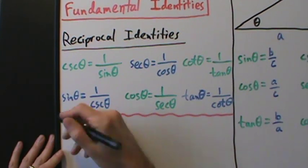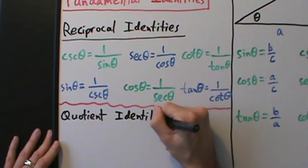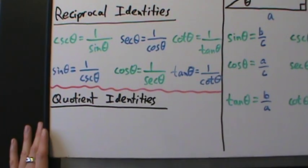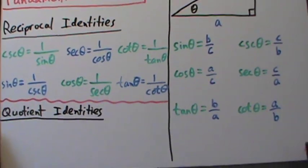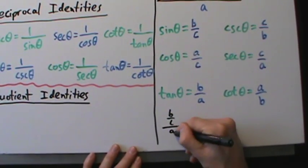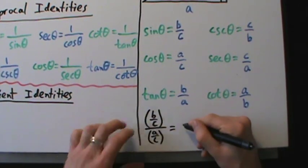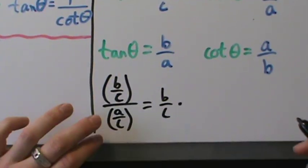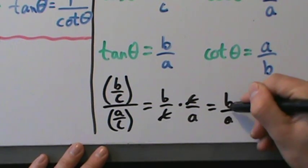Let's talk about the quotient identities. Quotient just means division. What we're going to do is see some relationships between these functions by dividing. If we take B over C and divide it by A over C: B over C divided by A over C — dividing by A over C means multiplying by C over A, the C's cancel, and we're left with B over A, which is the tangent of theta.